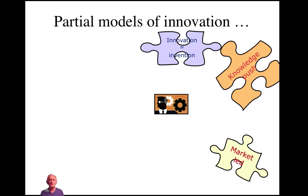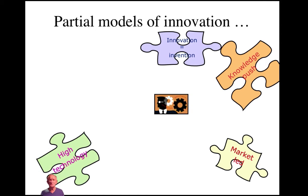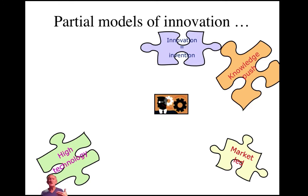Put knowledge push and market pull together and we've got a much more robust view of how to organize and manage our innovation journey. Let's look at a few others. 'Innovation is about high technology' — well, yes, technology enables all sorts of things, but the reality is a great deal of innovation doesn't involve gadgets, computers, or software. A great deal of innovation, especially in social and service innovation, is about people and the way they interact.